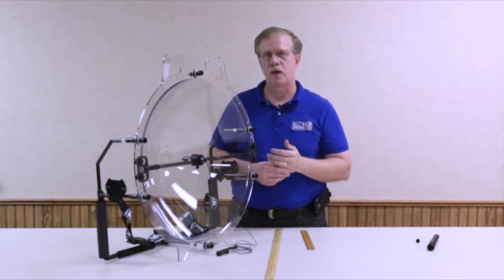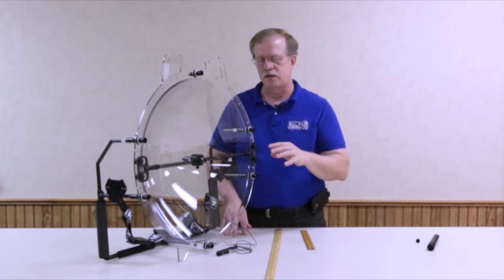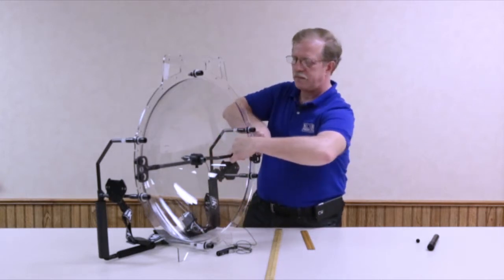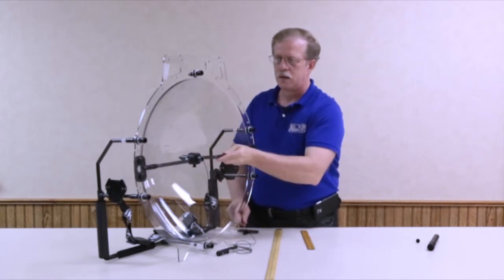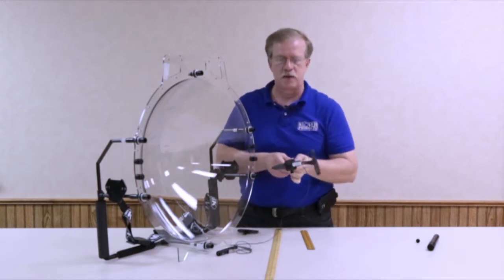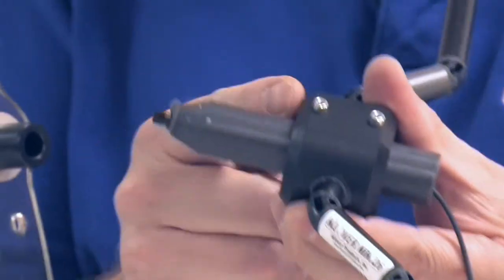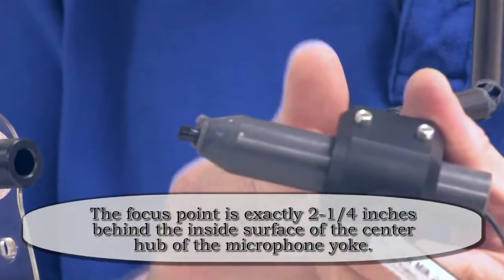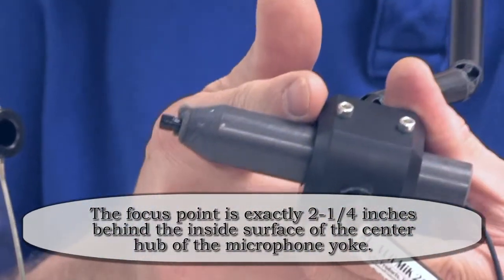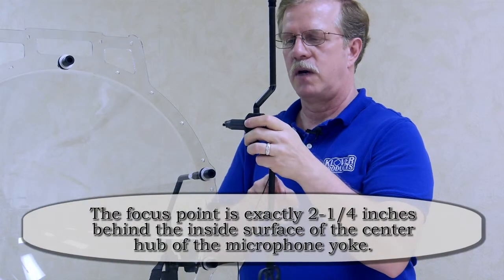Now a more convenient way to focus the microphone is to remove it from the parabolic and locate the microphone two and one quarter inches behind this rear surface of the center hub of the microphone yoke.